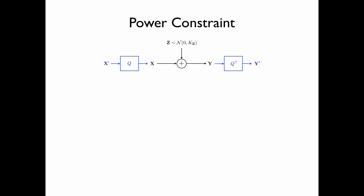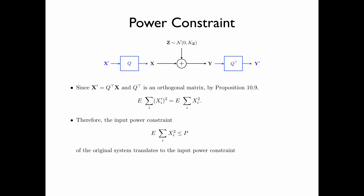In the original system, we have a power constraint P on the input vector x. Since x' = Q^T·x and Q^T is an orthogonal matrix, by Proposition 10.9, energy is preserved: the expectation of Σ_i (x'_i)² equals the expectation of Σ_i (x_i)². Therefore, the input power constraint E[Σ_i (x_i)²] ≤ P of the original system translates to E[Σ_i (x'_i)²] ≤ P in the equivalent system.